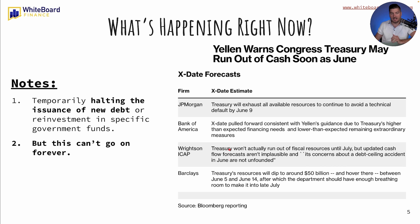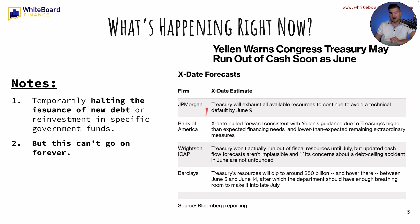So what's happening right now? A lot of this stuff is happening before June — that's why I wanted to get this video out before June. Yellen warns Congress Treasury may run out of cash as soon as June. They are temporarily halting the issuance of new debt or reinvestment in specific government funds, but this obviously can't go on forever. JP Morgan says the Treasury will exhaust all available resources to avoid a technical default by June 9th. The Treasury's resources will dip to around $50 billion and hover there between June 5th and June 14th, after which the department should have enough breathing room to make it into late July.